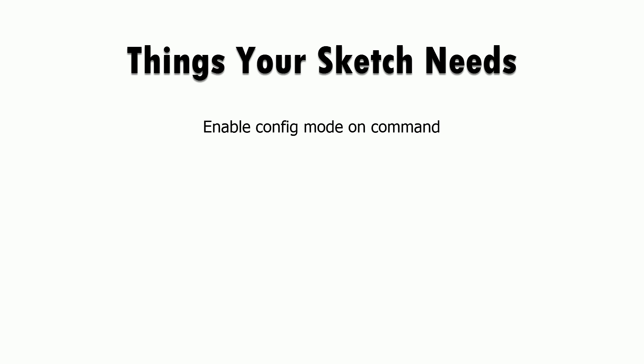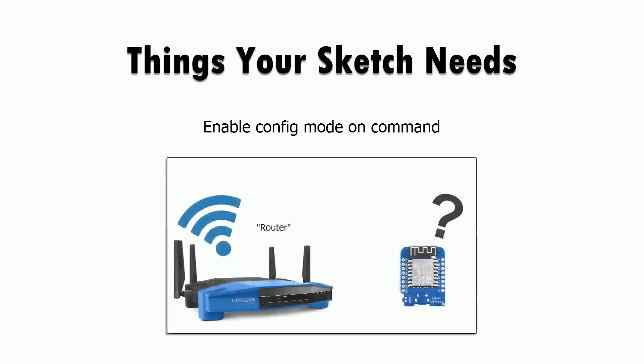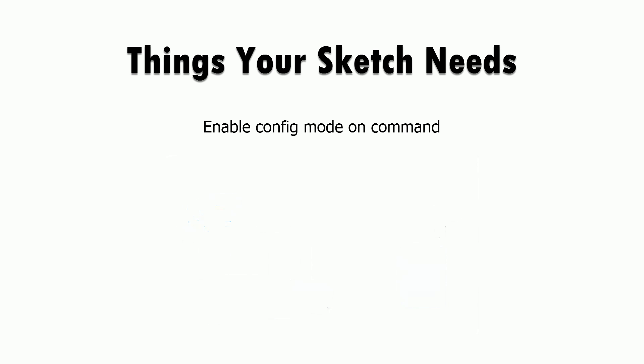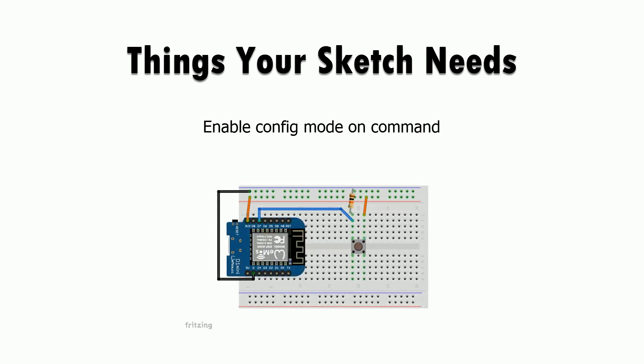In your sketch you'll need a couple of things before we can use this. You'll need to be able to enable config mode on command, because previously config mode would happen when your network wouldn't connect, but now your network may connect and you still want to change one of the configurations. The easiest way to do this is just with a button.